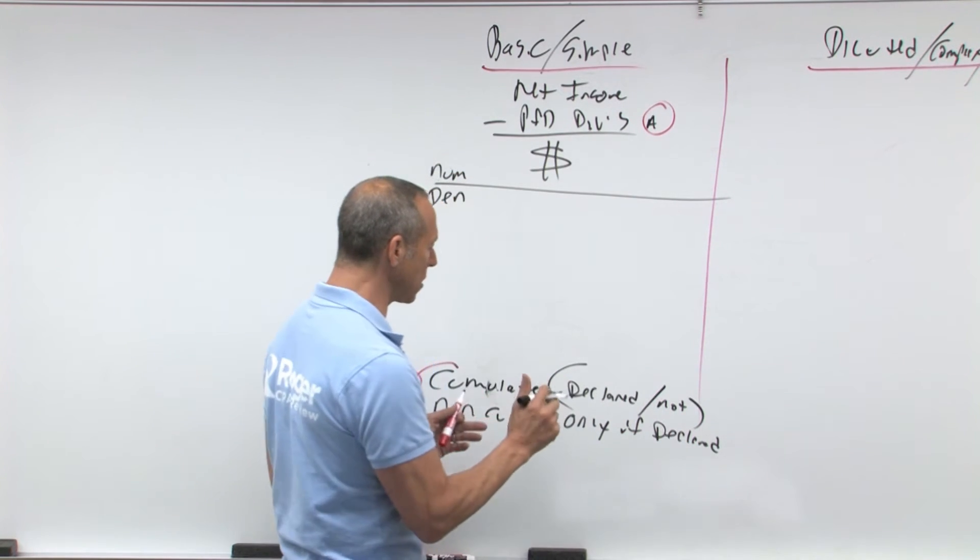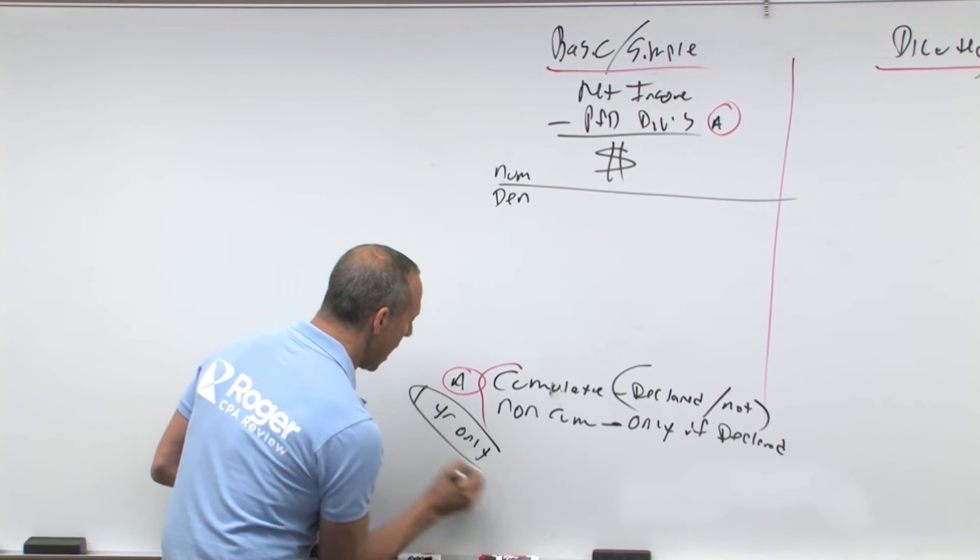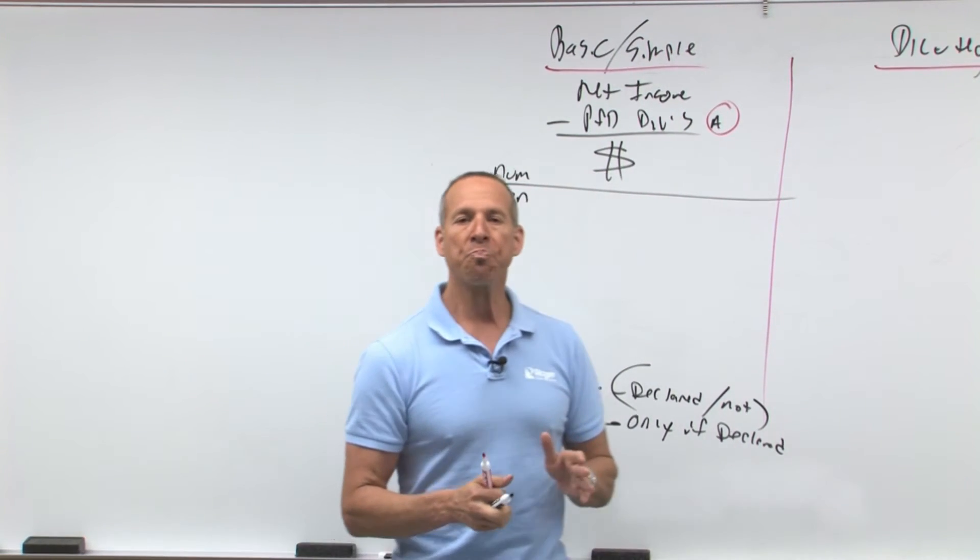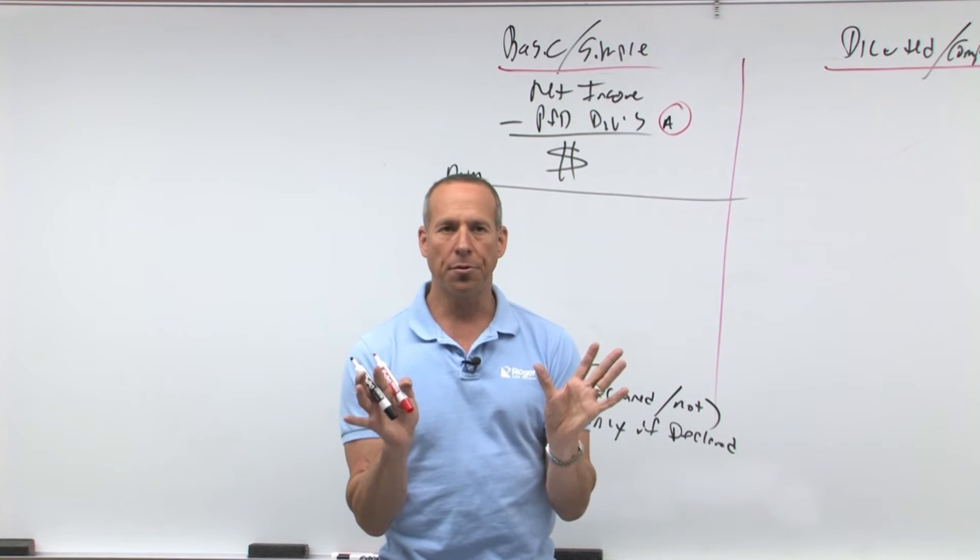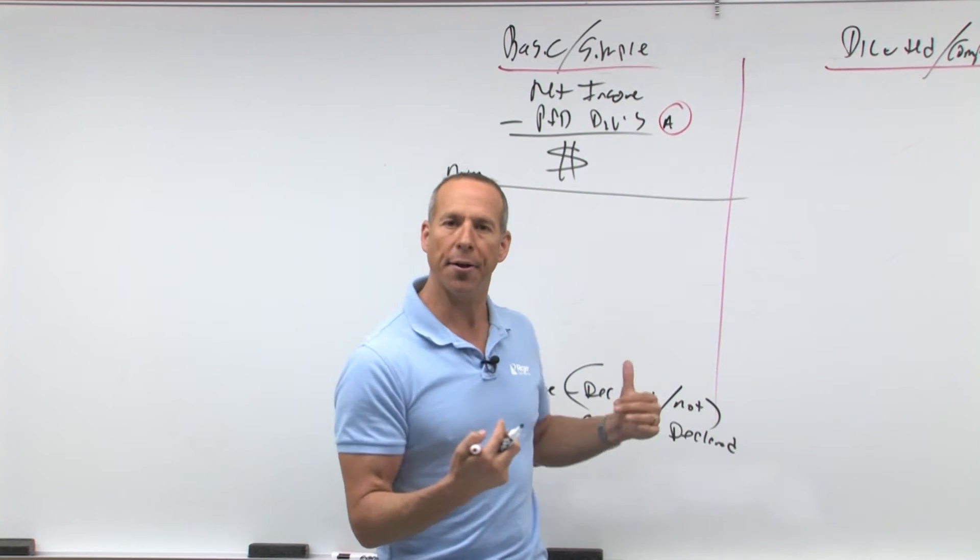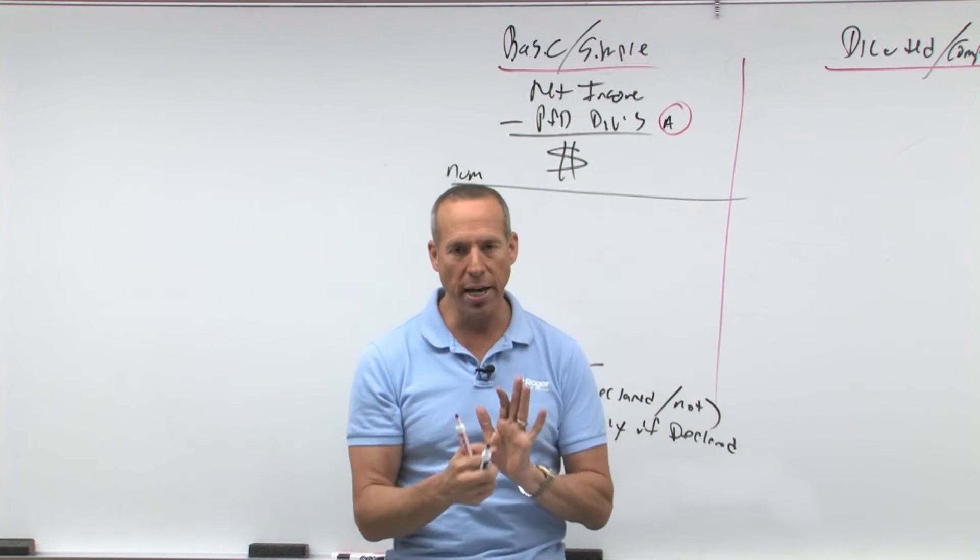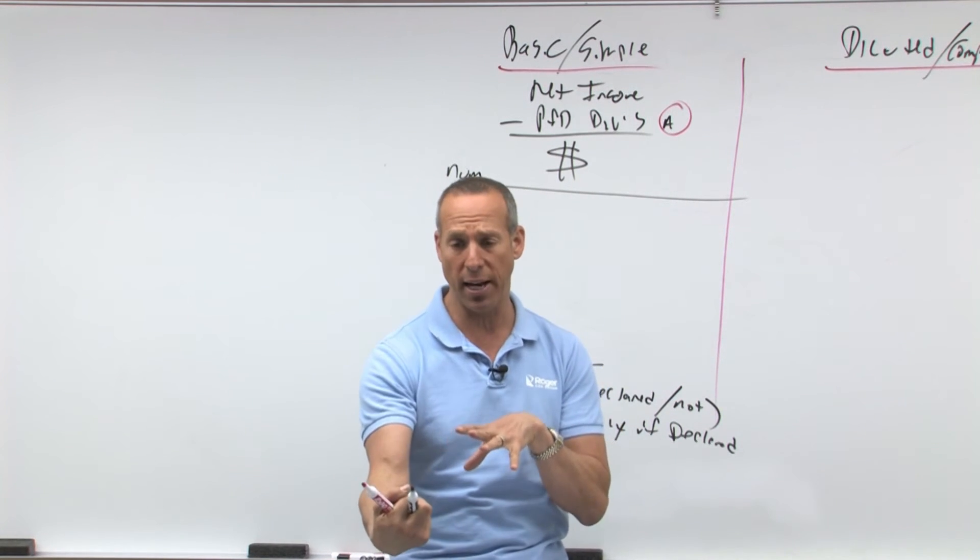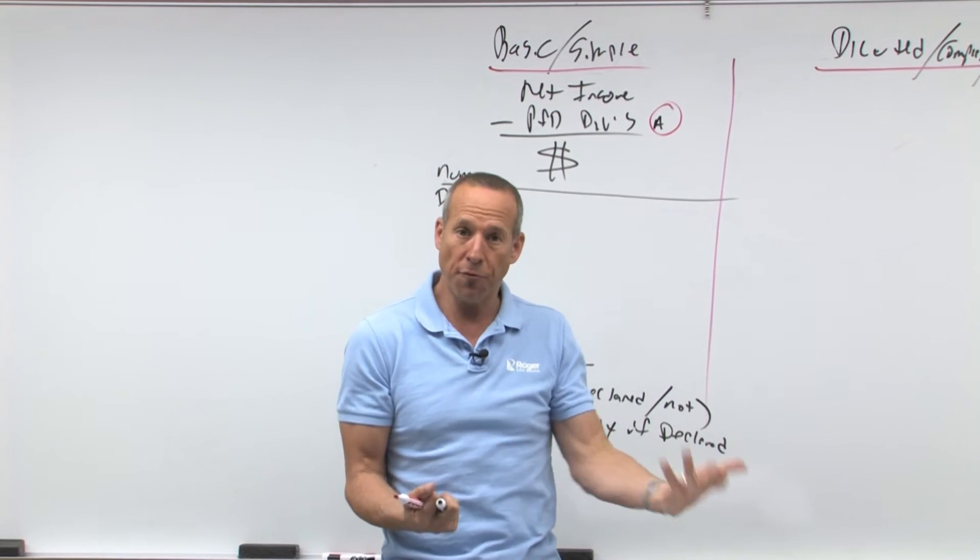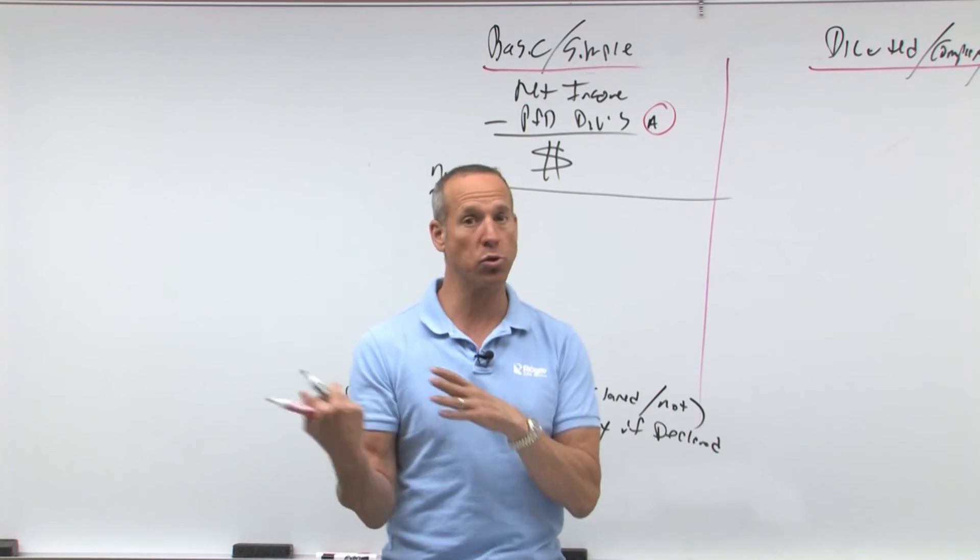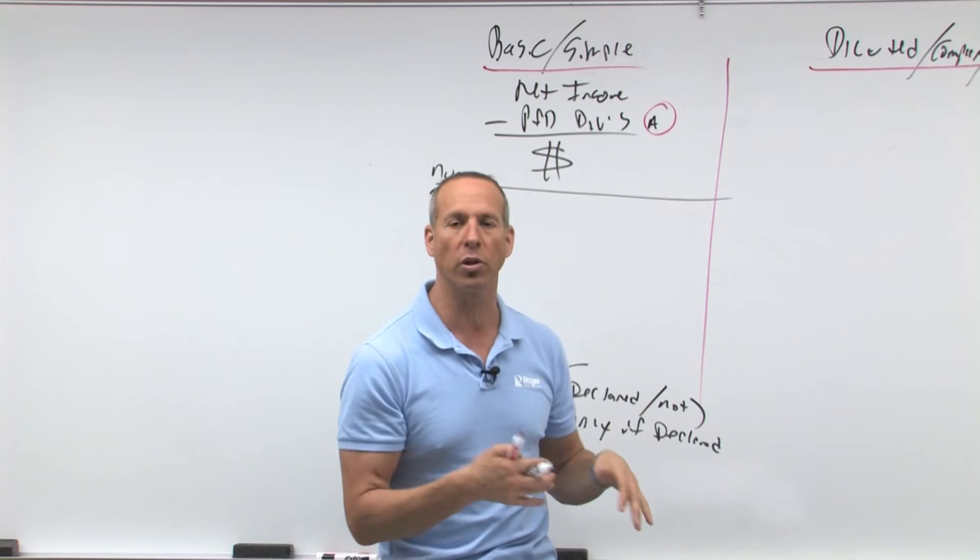But for how many years? This is an important point, for one year only. And the reason I mention that is, let's think about it. If I don't declare a dividend, do I take it out this year? Yes, because let's assume it's cumulative. I don't declare it, it's cumulative, you take it out, because it's theoretically as if you paid it. So then next year, we still don't declare it, you take it out for next year, but not this year, because this year's was already done. So it's one year only, this year only.